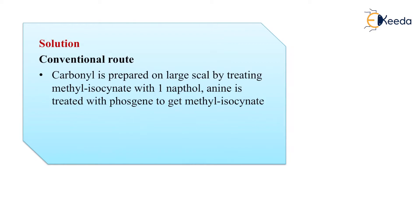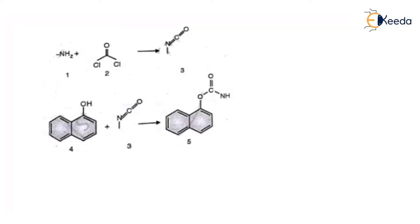1-naphthol is nothing but 2 benzene rings close to each other, 2 benzene rings which are attached to each other and amine is treated with phosgene to get methyl isocyanate. We have NH2 over here and at number 1 you have NH2 which is nothing but amine.